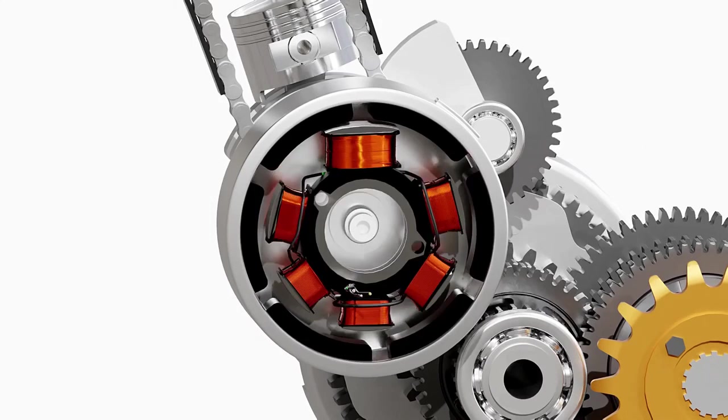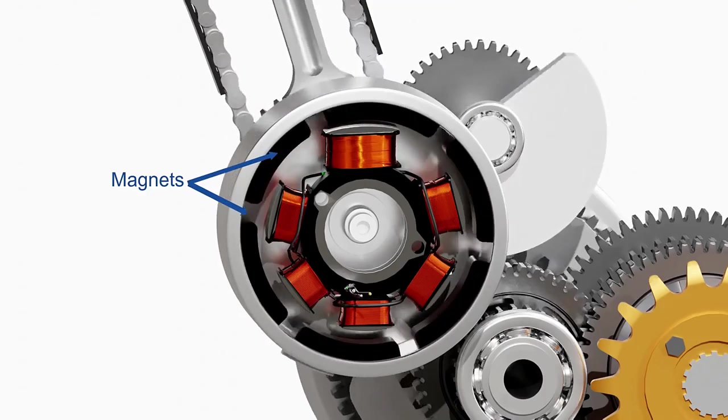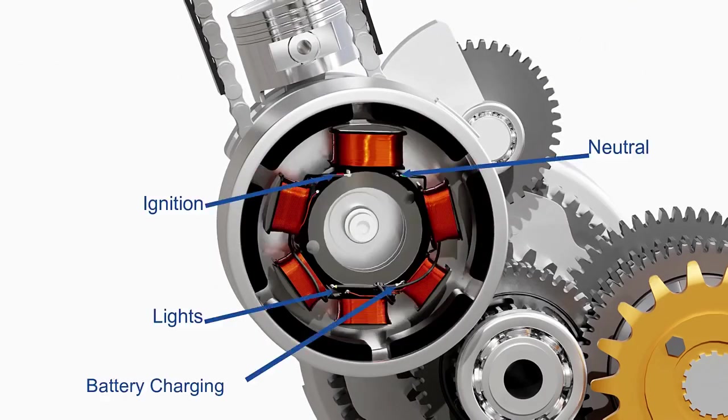The flywheel of the motorcycle has a set of permanent magnets which revolves around the stator and produces alternating current in the coils. Each output from the stator has different purposes, as shown here.